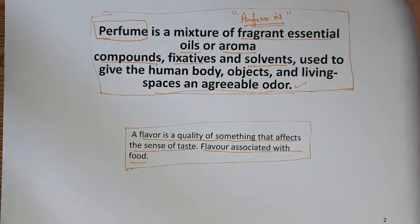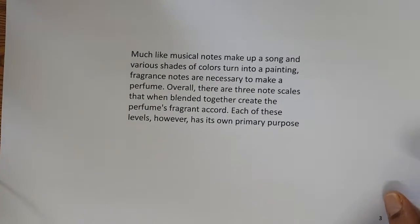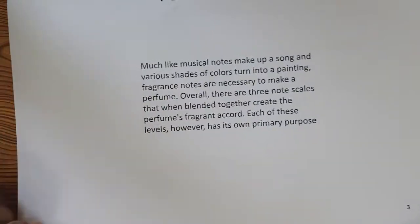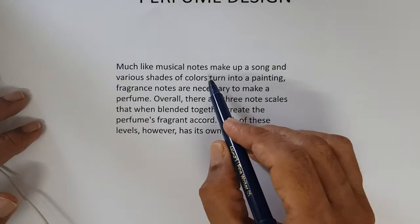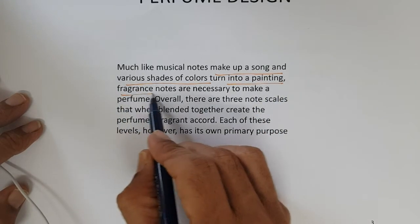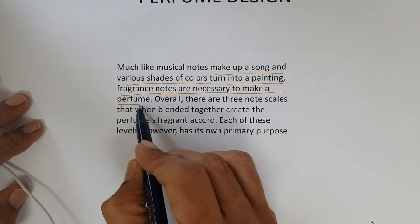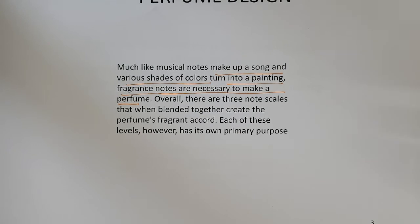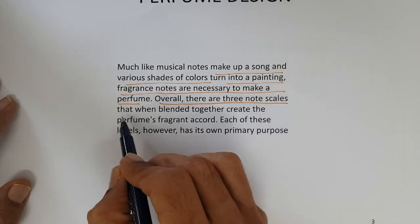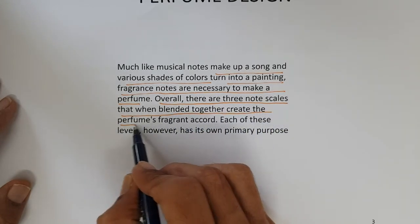Perfume is not a single compound — it's a blend of many compounds. Much like musical notes make up a song, or various shades of color turn into a painting, fragrance notes combine to form a perfume. This perfume is then incorporated into the final cosmetic product. Overall, there are three note scales that, when blended together, create the perfume's fragrant accord, each with its own primary purpose.